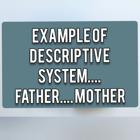In Hindi there are mostly descriptive terms — chacha, mama, tau, sala, bhano, nandoi, bhanja, bhatija, bhabhi, devar, etc. are all descriptive terms that designate the speaker's exact relation with another person. This is all about kinship terms. The next class will be about tribes of India.